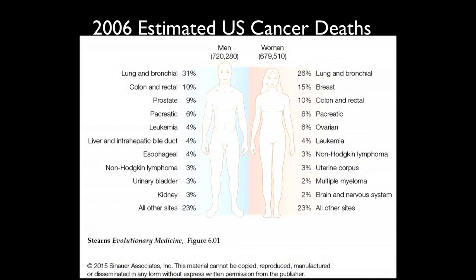To give some idea of the burden of this disease, here are the estimated number of cancer deaths in 2006 in the United States for men and for women. In both cases, lung and bronchial cancer was the most frequent kind of fatal cancer. For men, the second was colon and rectal cancer, and for women it was breast cancer. The third for men was prostate, and the third for women was colon and rectal — so a sexual-system cancer was in the top three for both sexes. Breast cancer was a bit more frequent than prostate cancer, and the fourth most frequent was pancreatic cancer.